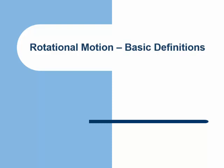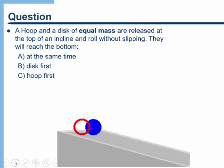In this video, we're going to begin our discussion about rotational motion, and we'll start out by making some basic definitions. Before we do that, let's take a look at the following question: a hoop and a disc of equal mass are released at the top of an incline and roll without slipping. Will they reach the bottom at the same time, the disc first, or the hoop first? Go ahead, pause the video and think about this.